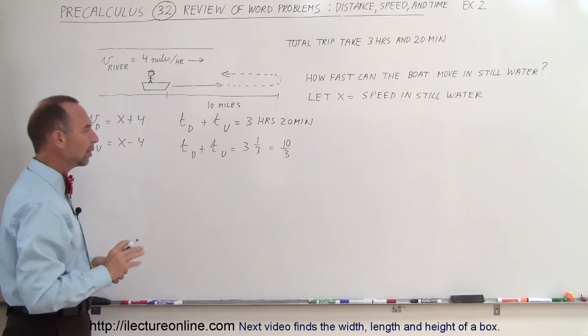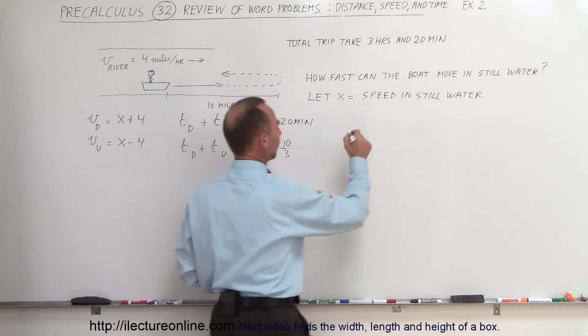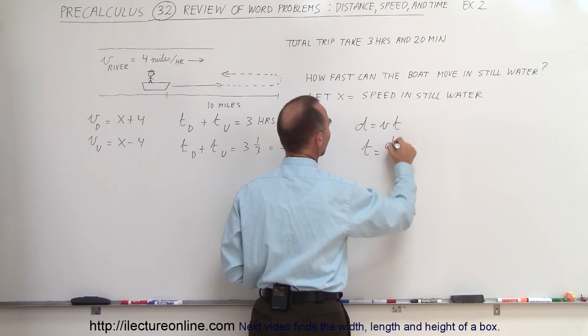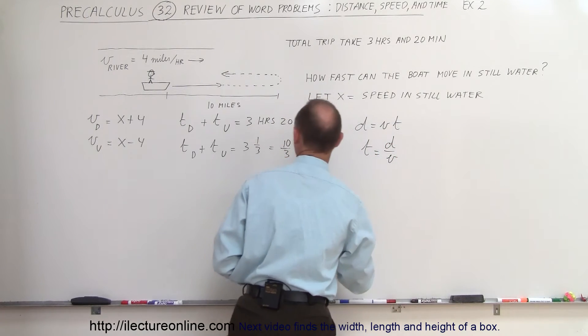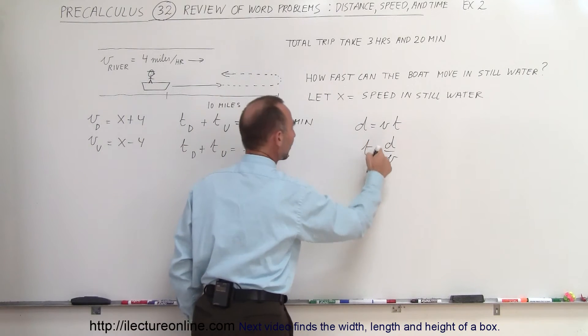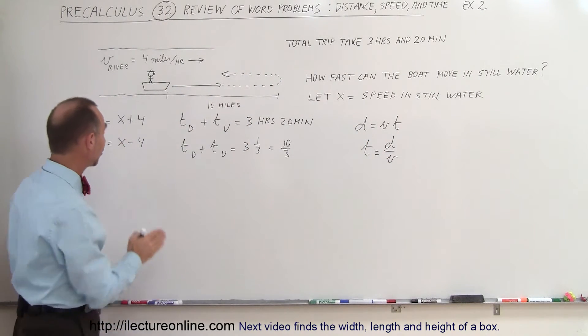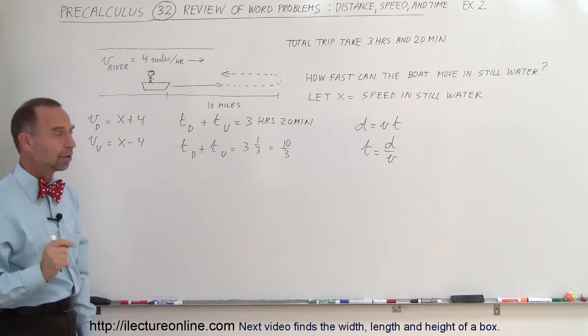Alright, now we also have a definition for distance, which is equal to velocity times time, which means that time is equal to distance divided by velocity. So we can replace time by distance and velocity because the distance is known, ten miles, and the velocity is expressed in terms of x.